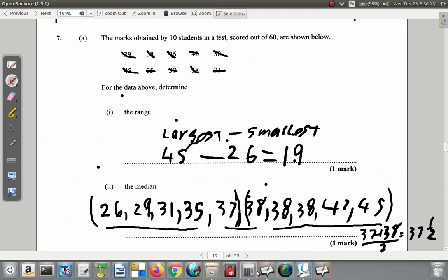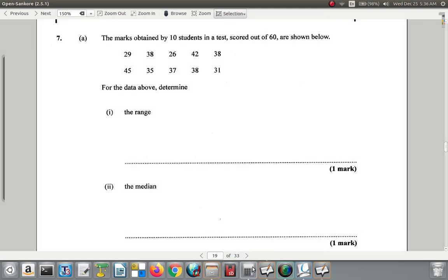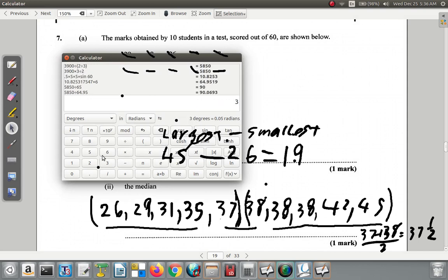So that's one thing that you could do. You could say 37 plus 38 equals, and that you divide it by 2, you get 37.5, 37 and a half.